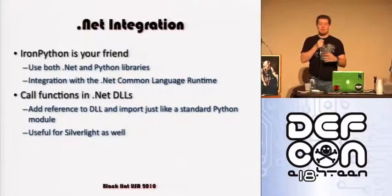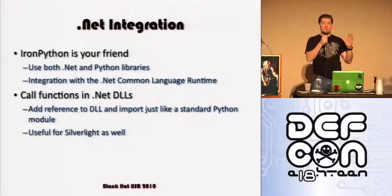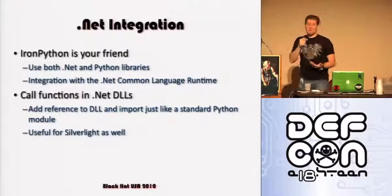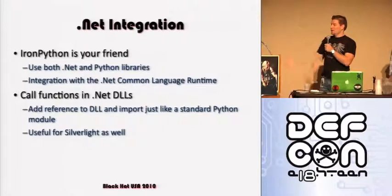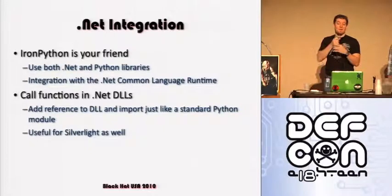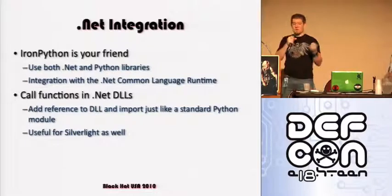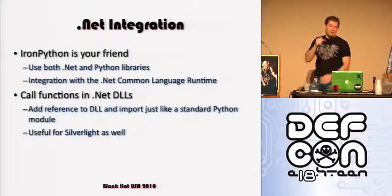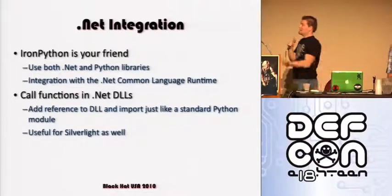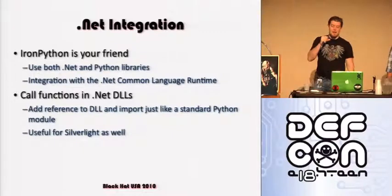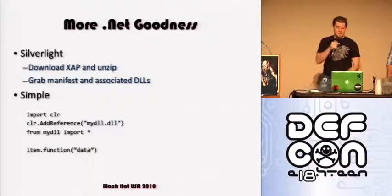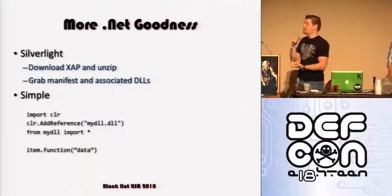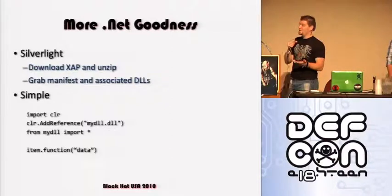Dot net integration. How many people here have ever used IronPython at all? A few. You might not be aware that you can use your Python code inside of .NET, and that provides some very useful advantages — for example, being able to import .NET DLLs and call functions on them. It might be a Silverlight object or some other .NET environment. You also have integration into the .NET Common Language Runtime, so you can import the CLR. You could do something like download the XAP file, unzip it, grab the manifest, enumerate through it, and grab all the DLLs. The example shows importing the CLR, adding a reference, and importing all the functions out of the DLL.